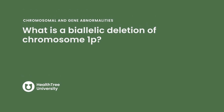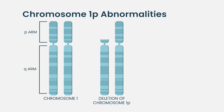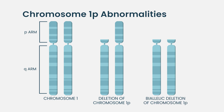What is a biallelic deletion of chromosome 1p? For each chromosome, you should have 2. If you lose one or have a problem with one, the theory is the other one will still work. However, if you lose the other one as well, then you don't have any to do the work. That is what we call biallelic — when both copies are lost. The prefix 'bi' means two.